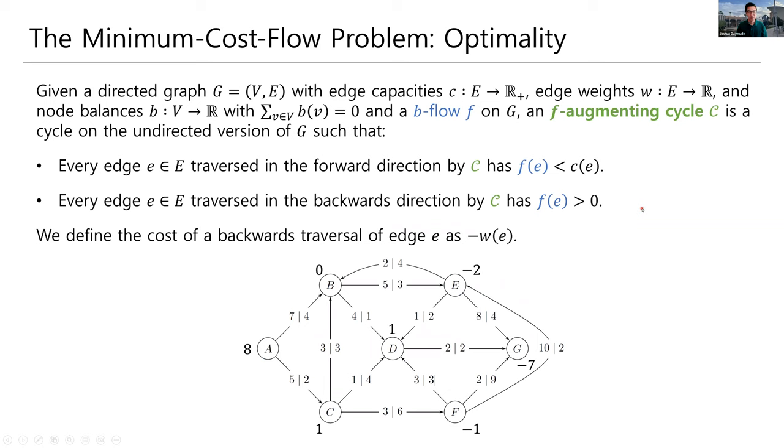Okay, so now that we understand what a b-flow is and what we're trying to minimize, let's go off and let's try to investigate and see if there's some kind of structure that we can use to determine when we have an optimal minimum cost flow.